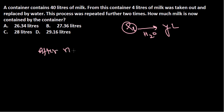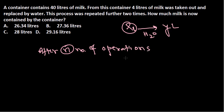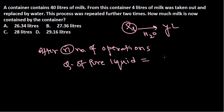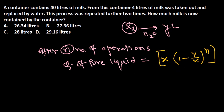After n number of operations, we can calculate the quantity of the pure liquid — that is, the first liquid which was present. The quantity of pure liquid can be calculated using the formula: x multiplied by (1 minus y divided by x) to the power n. This is the formula to calculate this result.